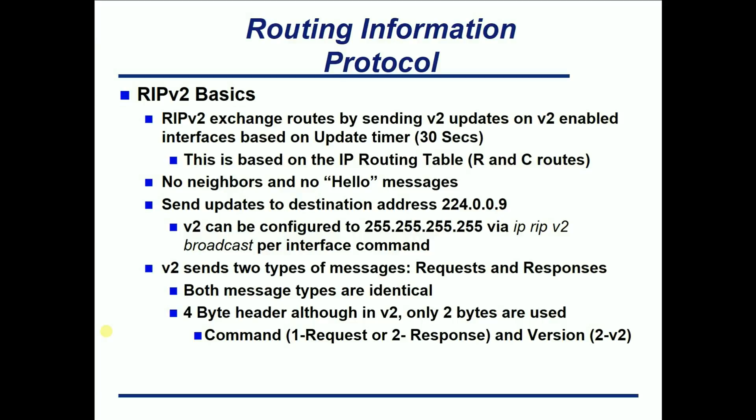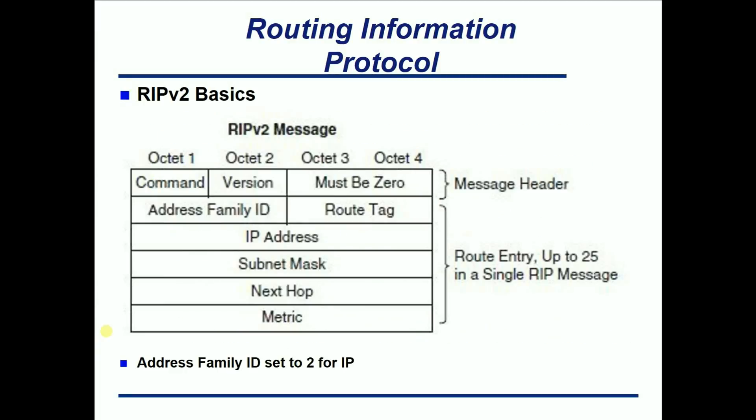Version 2 sends two types of messages: requests and responses. Both messages are identical; however, in the 4-byte header of the RIP message, only two bytes are used. In the first byte, if it's set to 1 it's a request message; if set to 2, it's a response. The other byte is for the version: 2 equals version 2, 1 equals version 1.